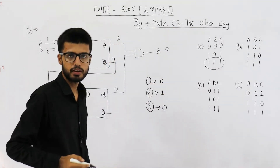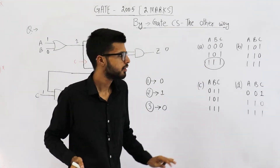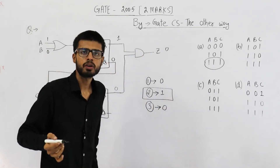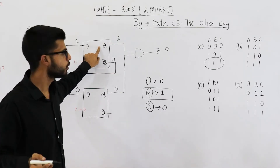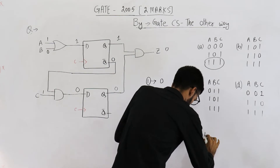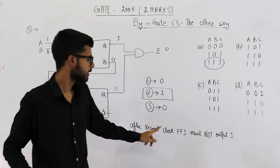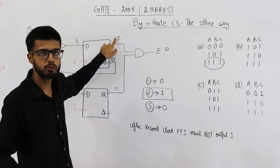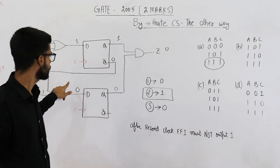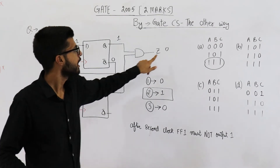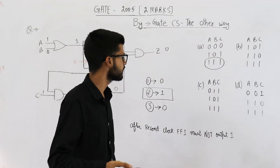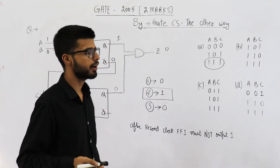So the value of Z will be 0 at the end of the third clock cycle. We haven't even seen what the third input is. That means after the second clock, flip-flop 1 must not output 1. If this output is 1, then Q_bar is 0, and this 0 remains until the third clock cycle. When the third clock is given, this 0 is transferred, making the final output 0. So let us see which inputs give a 0 at flip-flop 1 at the end of the second clock cycle.